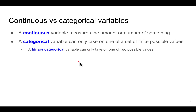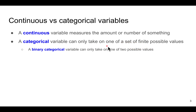Basically, there are two types of variables: continuous variables and categorical variables. Continuous variables measure the amounts or the number of something, whereas categorical variables have a finite set of possible values they can take. There's a special subclass called binary categorical variables where there are only two possible values — kind of yes or no, true or false.